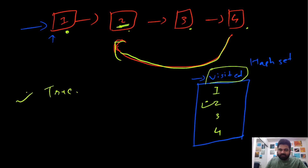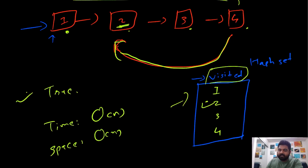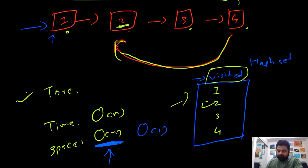This solution is perfectly fine and it works. If we calculate the time and space complexity: the time complexity is O(N) because we are iterating over all the nodes just one time, and the space complexity is also O(N) because we are using this additional visited hash set to detect whether there exists a cycle. The next thing your interviewer is going to do is ask you to solve this problem without using additional space — the space complexity should be O(1). So let me show you the most optimal solution where space complexity is O(1) and time complexity is O(N).